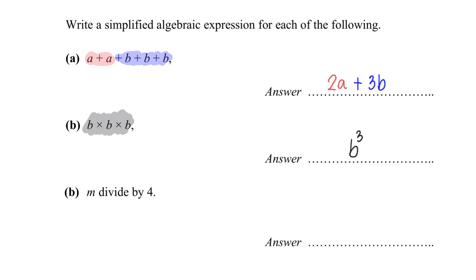And the last one: we will have letter M divided by four. Although we know that the division sign is used, in algebra we usually like to write it as a fraction. So in this case, M divided by 4. And we are good — we have finished solving this particular question.